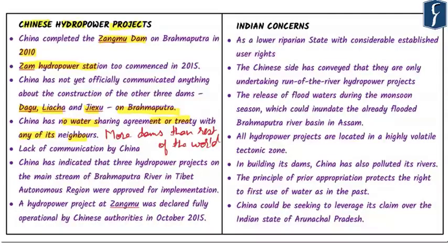China does not have any water-sharing agreement or treaty with any of its neighbors, including India. Many would recall that there is the Indus Waters Treaty between India and Pakistan, but a similar arrangement for rivers flowing from China to India is absent altogether. China behaves in a self-centered manner, and its lack of communication regarding dam construction has led to an atmosphere of suspicion and mistrust in India, especially in its northeastern region.